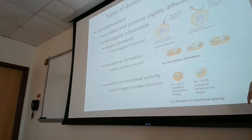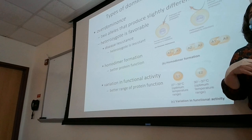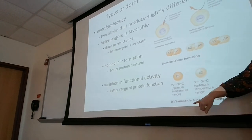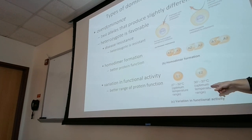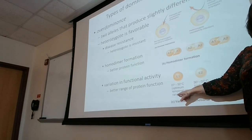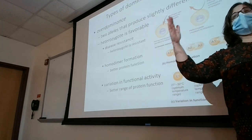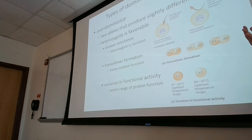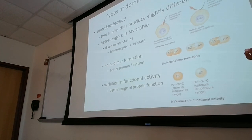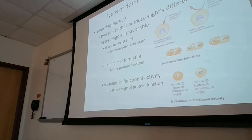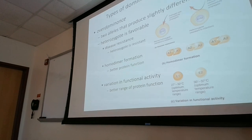Another advantage is varying functional activity. If one allele encodes an enzyme that works at one temperature and the other allele encodes an enzyme that works at a different temperature, a homozygote only has one temperature range, but a heterozygote has both. That's really important for organisms living in environments where temperature changes. Think about global warming — as we warm up, organisms able to work in more than one temperature range are going to do better and pass down their genes more, so we'll start to see more heterozygotes for those traits.